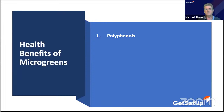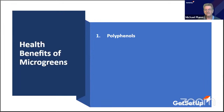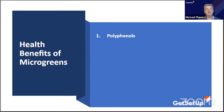Microgreens have all the essential family of nutrients needed to heal your microbiome. They also improve heart health — there's a lot of scientific evidence if you want to look it up. Heart disease is one of the leading causes of death.